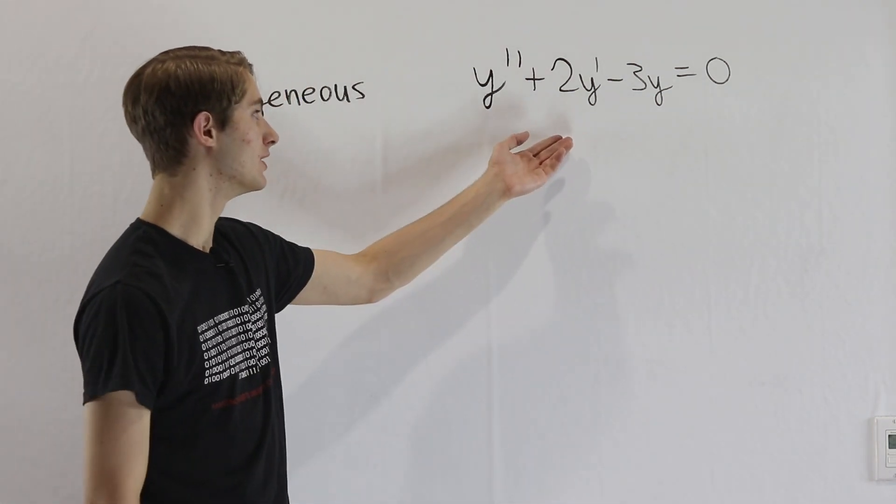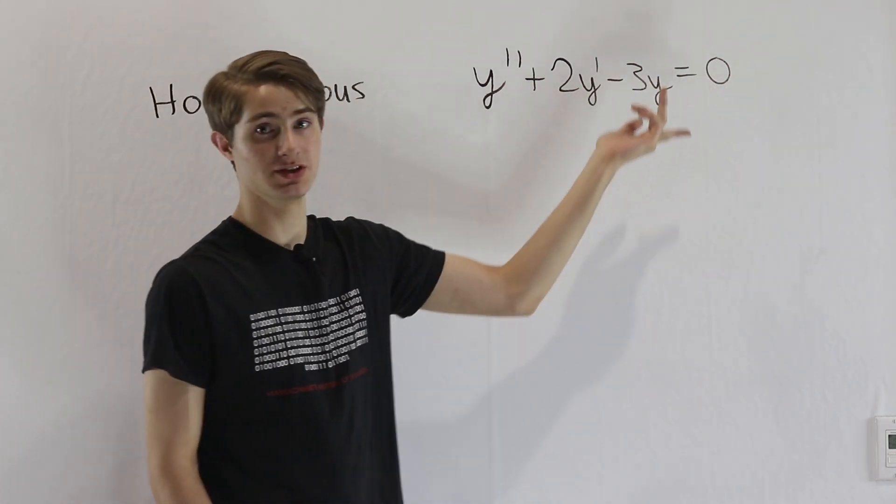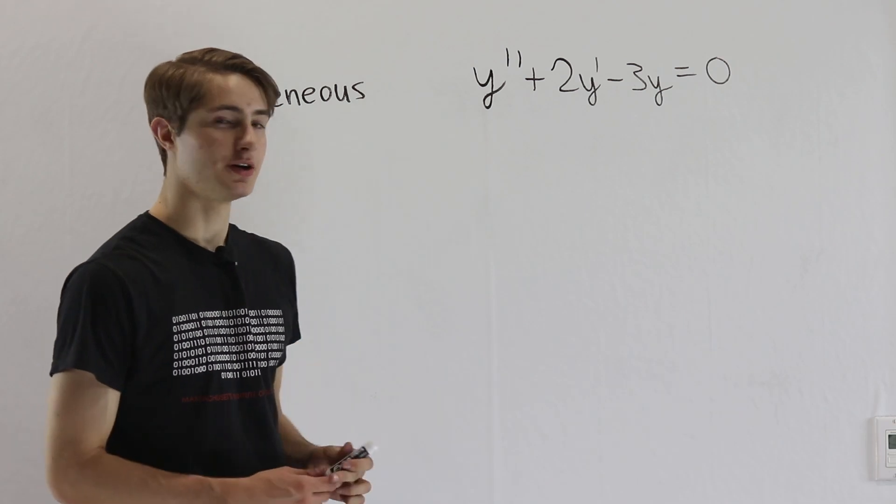For example, if y prime were sine of x times y, there would be no way you could add them up and get to 0. So they have to be some kind of constant multiple.